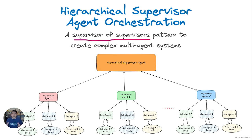The third approach is a hierarchical supervisor agent orchestration. This extends the supervisor agent with a hierarchy of supervisors, where each supervisor may oversee a subset of agents and communicate back to the uber supervisor. This tiered structure allows for the creation of a complex, scalable, and very extendable system.